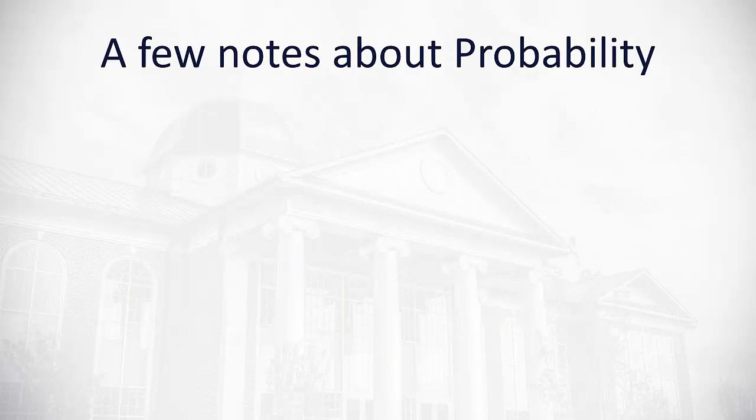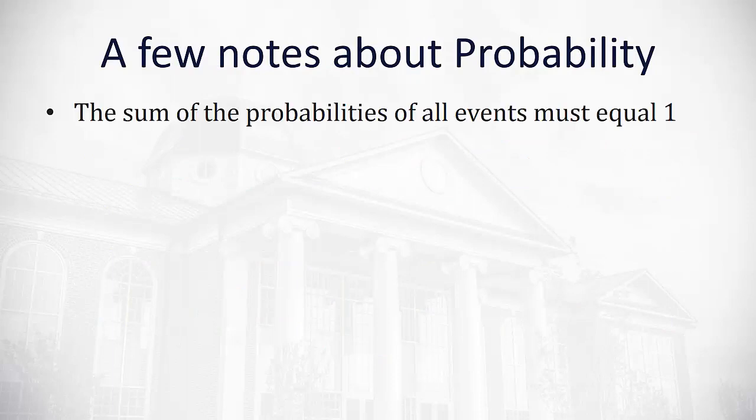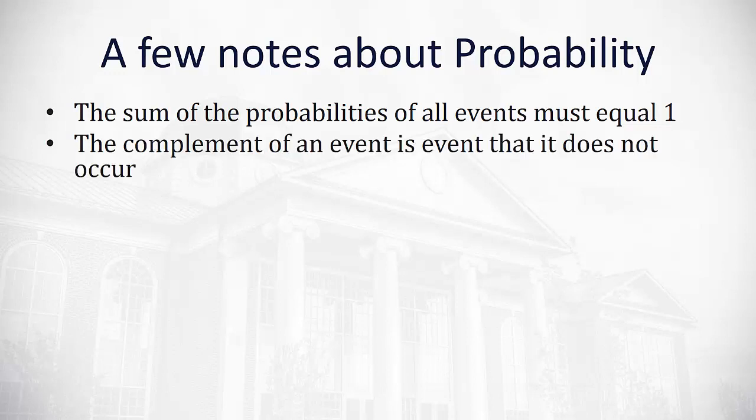A few notes as we work with probability. First, the sum of all the probabilities of all the events must always equal 1, because something is guaranteed to occur. We might not know what option, but all together they should add to 1.